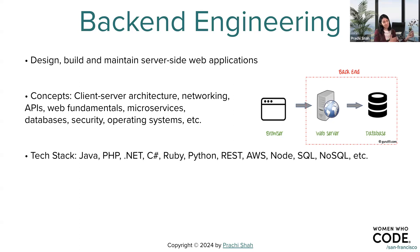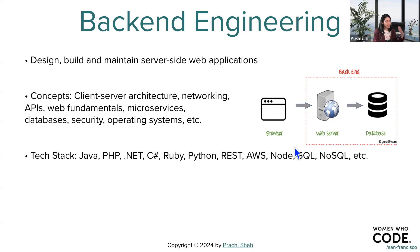If you think about the tech stack, it's a wide range: Java, PHP, .NET, frameworks, languages, C#, Ruby, Python, REST APIs — that's the standard. AWS, Node, SQL, NoSQL — all of this is considered backend because they encompass APIs, databases, different frameworks, different standards, and different platforms as well.